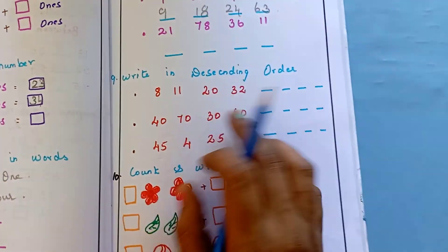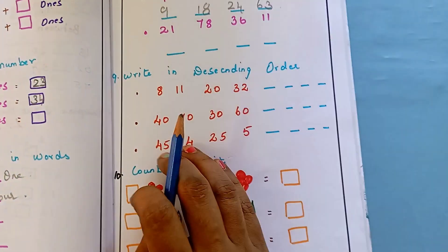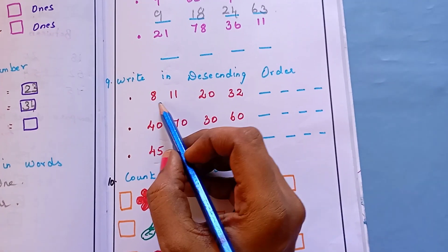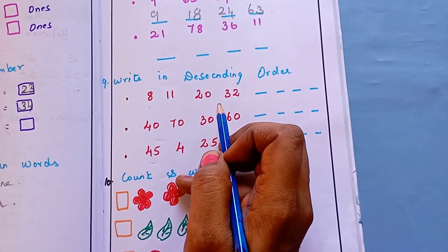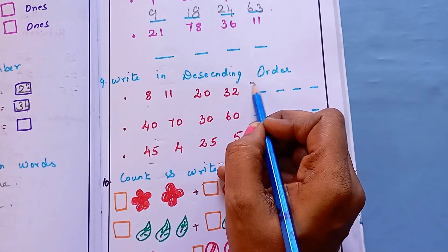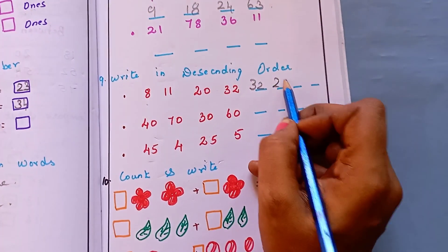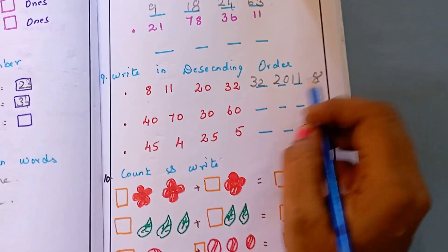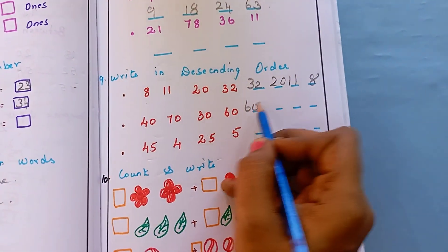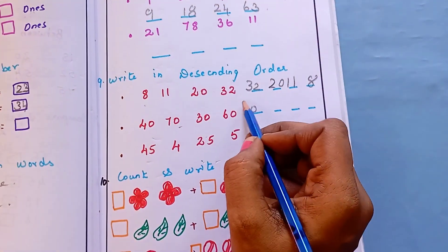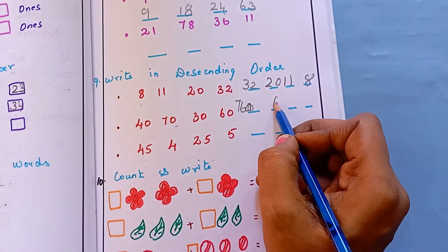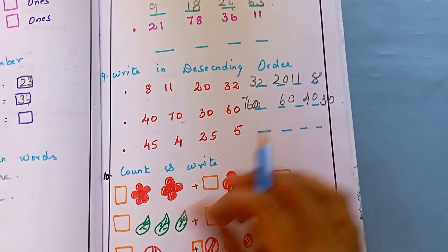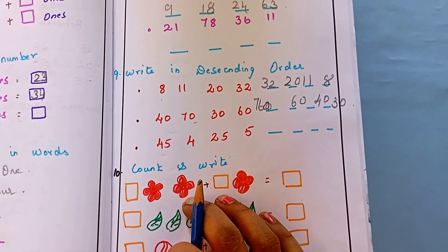The next question is: write in descending order. Descending order means from up to down — highest to lowest. So first find which is highest: 32 is the highest number, so write 32 first, then 20, then 11, then 8. For the next set, first it is 70, then 60, then 40, then 30. Like this, they have to go from highest to lowest.